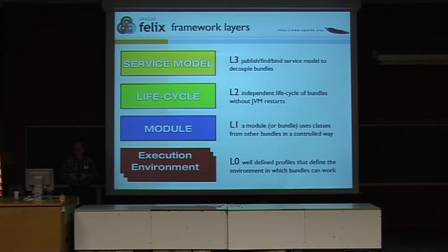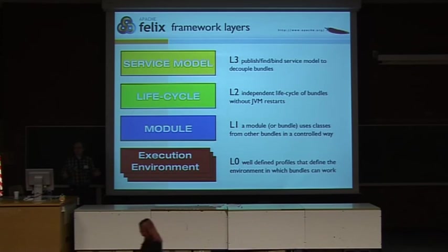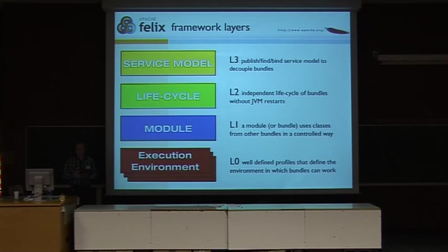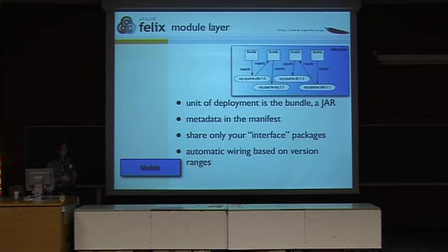The execution environment defines a couple of profiles. Some of you might have been doing Java embedded or Java on a mobile phone, where you have these different profiles which basically define which subset of APIs are available. You can have a very constrained profile that will run on an embedded device, or a full-blown Java 6 desktop profile if you run on a system that supports that. On top of that, there's the module layer, which is the first layer of the system, and the module, or bundle as it's called in OSGI, is basically the unit of deployment.